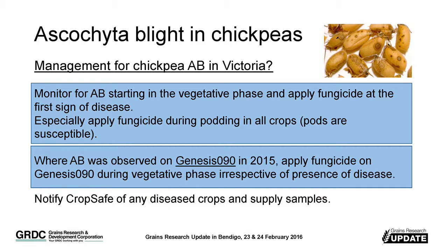In areas where growers or consultants have already seen a shift in this Ascochyta incidence in Genesis 90 last year, what's going to have to happen is continual monitoring and actually being proactive in applying a fungicide application at the early vegetative phase when we'd normally see the Ascochyta start to appear — so more or less anticipate that increased incidence of disease and counter it with fungicide application.